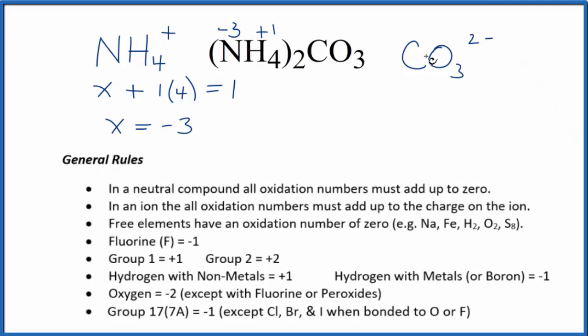For the carbonate ion, we don't know the carbon, but we do know that oxygen is always -2, with just a few exceptions. So we have -2, we have three oxygen atoms, and the whole thing equals that ionic charge. So we have this here, and now we just solve for x.